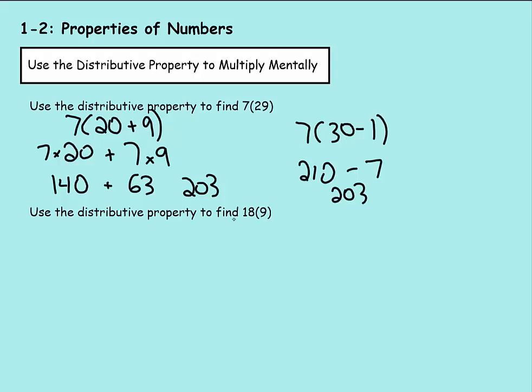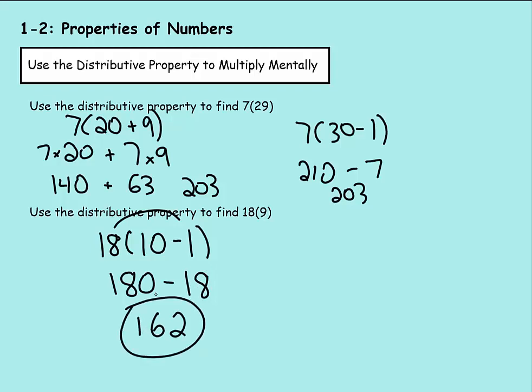Let's try it with this one. Use a distributive property to find 18 times 9. So 18 times 9 might not be too easy, but anything times 10 is easy. So we could do 18 times 10 minus 1. 18 times 10 is 180. Drop that minus down. 18 times 1 would be 18. 180 minus 18 is 162. And that would be the answer for that.